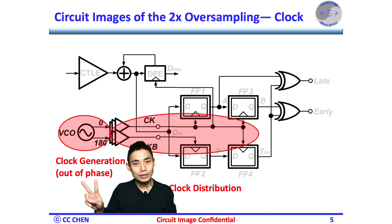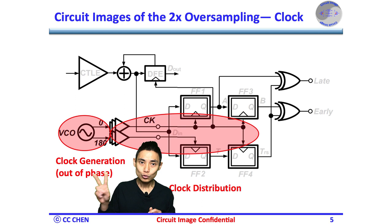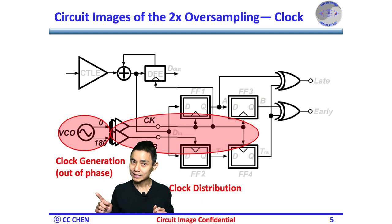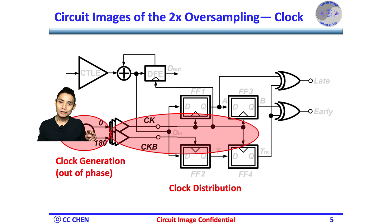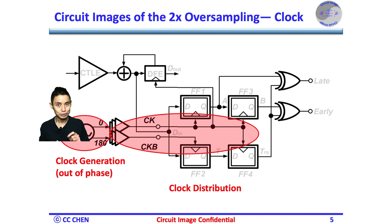The 2x oversampling system also implies the clocking overhead is doubled. In a full-rate CDR, your VCO must generate two-phase clocks for the data sample and transition sample respectively. In addition, you must distribute the two-phase clocks from the VCO all the way to the sampler input, which may at least double the clock power and also introduces clock phase mismatch during multi-phase generation and distribution.